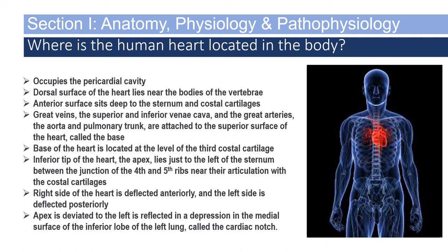The right side of the heart is deflected anteriorly, and the left side is deflected posteriorly. The apex is deviated to the left and is reflected in a depression in the medial surface of the inferior lobe of the left lung, called the cardiac notch. Your right lung has three lobes and your left lung has two, accommodating the space filled by the heart.